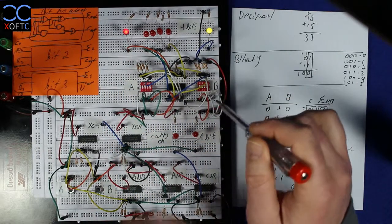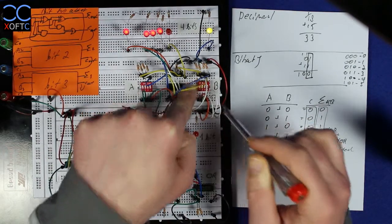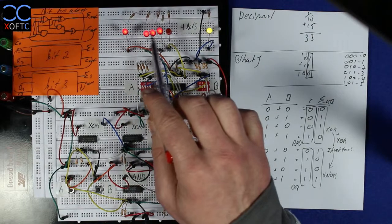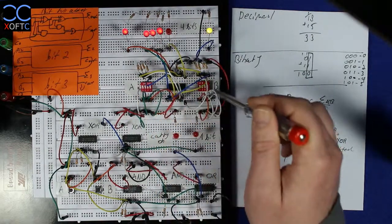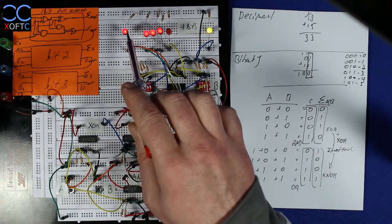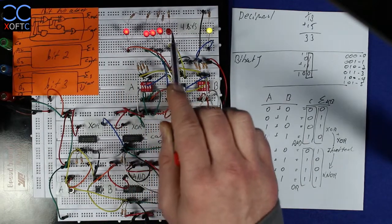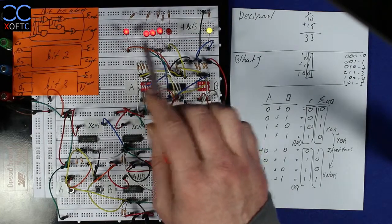And if I want to add 15 plus 15, then we get 16 plus 14, which is 30. So 15 plus 15 is 30. And here you can see that 16 plus 14, this one is still not on, so it's not 15, it's 14, is 30.